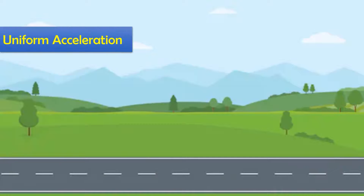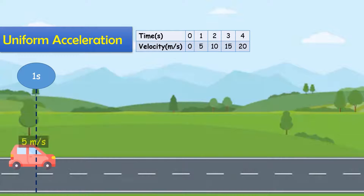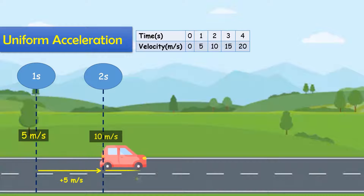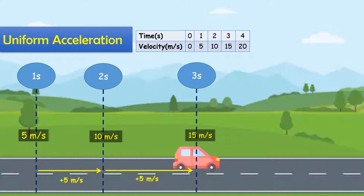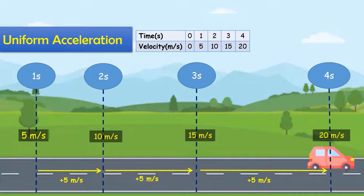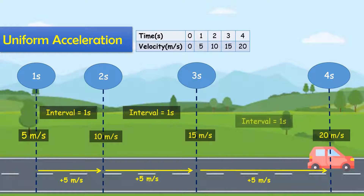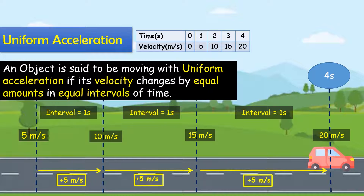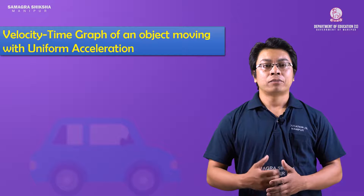For uniform acceleration, the body's acceleration is uniform. For example, at time 1 second the body's velocity is 5 meters per second; at 2 seconds, velocity is 10 meters per second; at 3 seconds, velocity is 15 meters per second; at 4 seconds, velocity is 20 meters per second. In equal intervals of time of 1 second, velocity increases by 5 meters per second each time, so the body's acceleration is uniform.